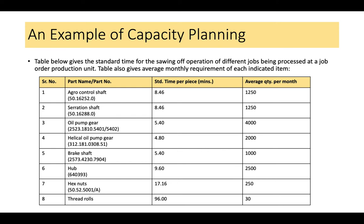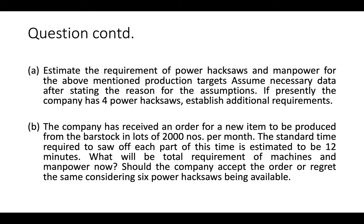Let us take an example of capacity planning. A table gives the standard time for sewing operations of different jobs at a job-order production unit, along with the average monthly requirement of each item. The question asks to estimate the requirement of power hexos and manpower for the stated production targets. Assume necessary data with stated reasons. If the company currently has 4 power hexos, determine the additional requirement. Also, a new order is received for 2,000 units per month with a standard time of 12 minutes per piece.